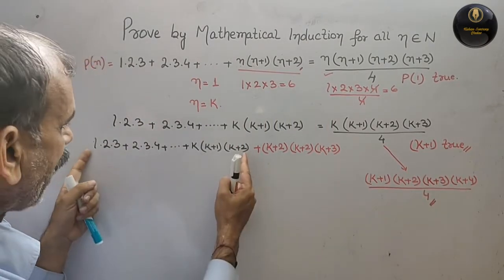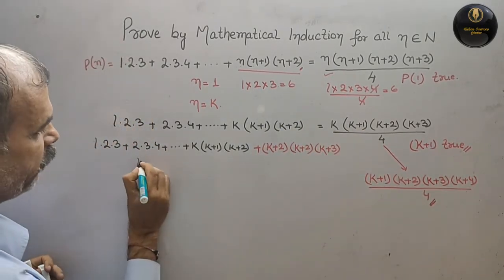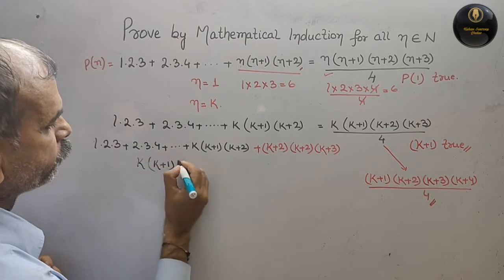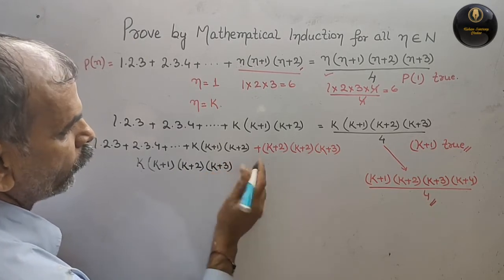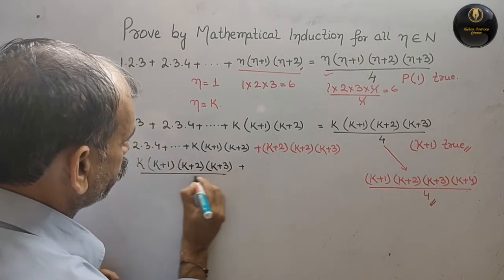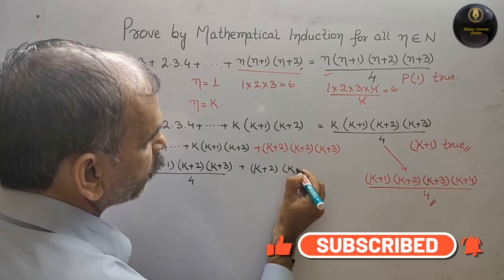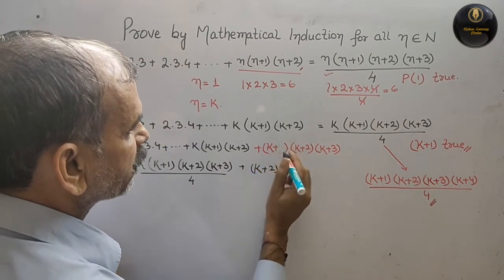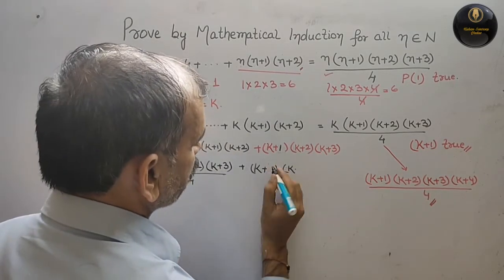We know the sum up to k equals k(k+1)(k+2)(k+3)/4 by the inductive hypothesis. Substituting that, the expression becomes: k(k+1)(k+2)(k+3)/4 + (k+1)(k+2)(k+3). Taking 4 as the common denominator, the numerator is k(k+1)(k+2)(k+3) + 4(k+1)(k+2)(k+3).